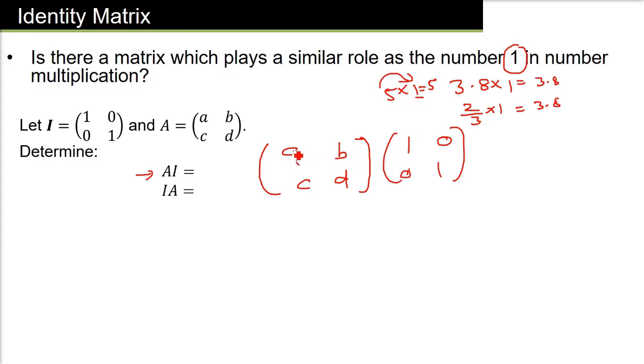So first row with first column, A into 1 plus B into 0. This is how we multiply matrix multiplication. And the first row now with the second column. So A into 0, A into 0 plus B into 1, B into 1.